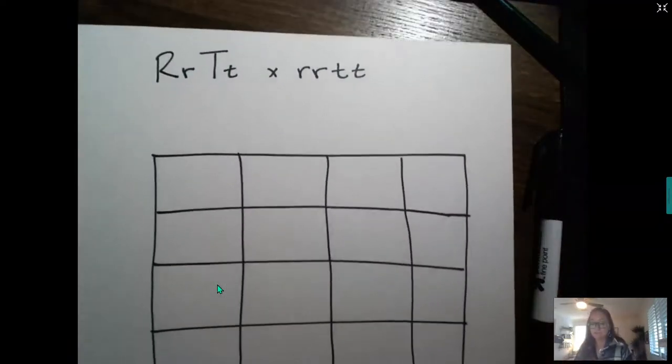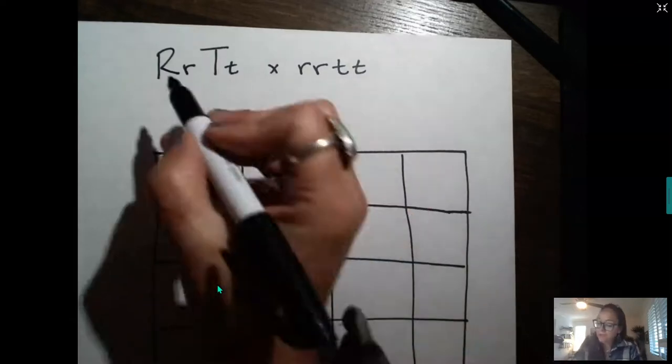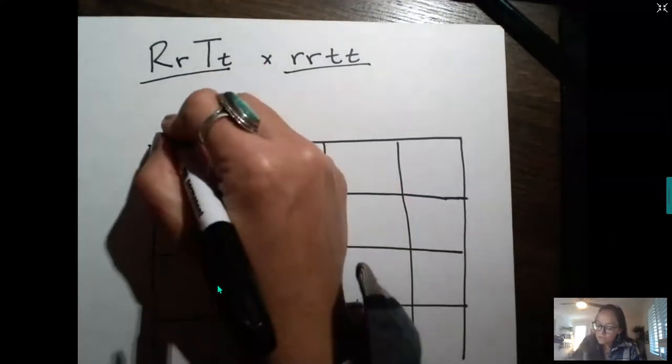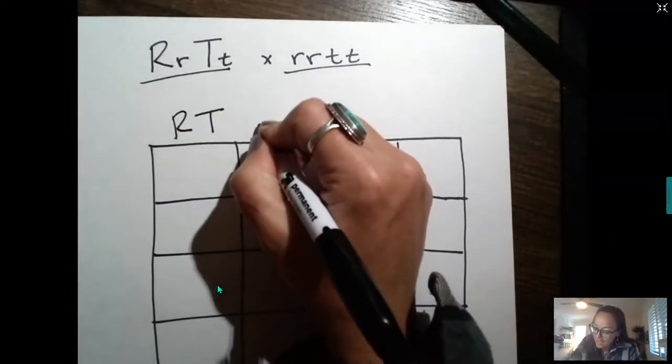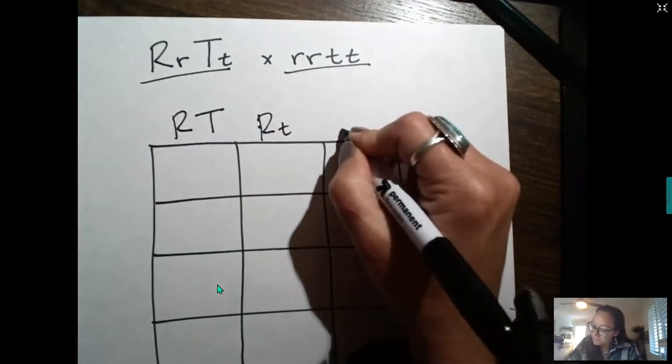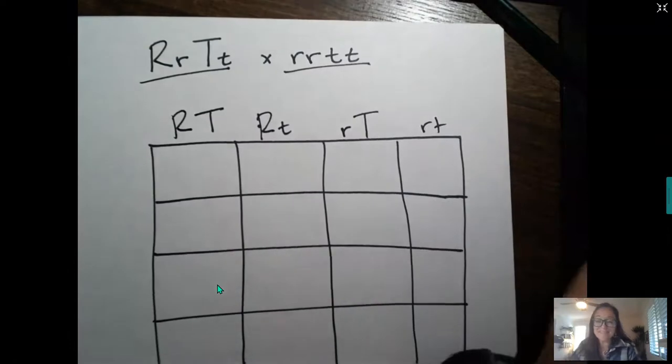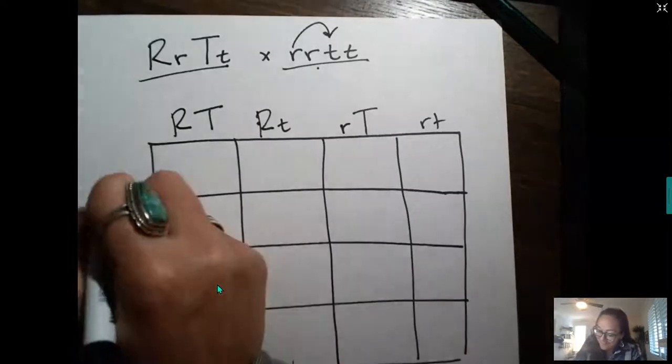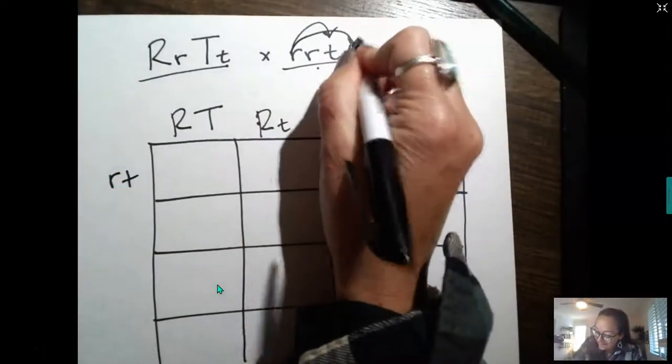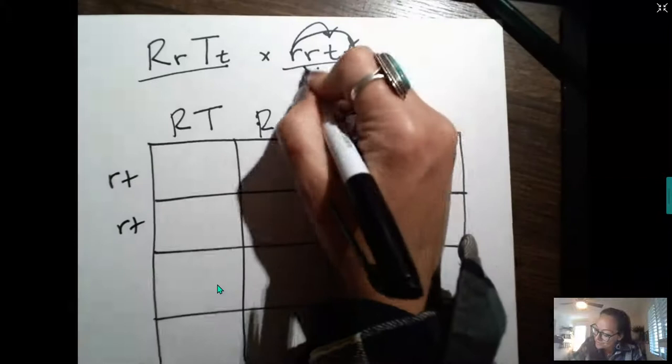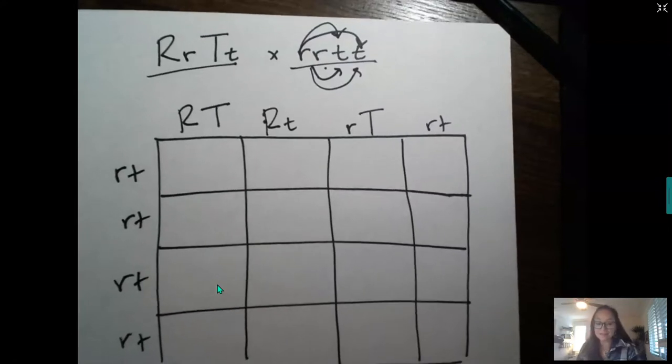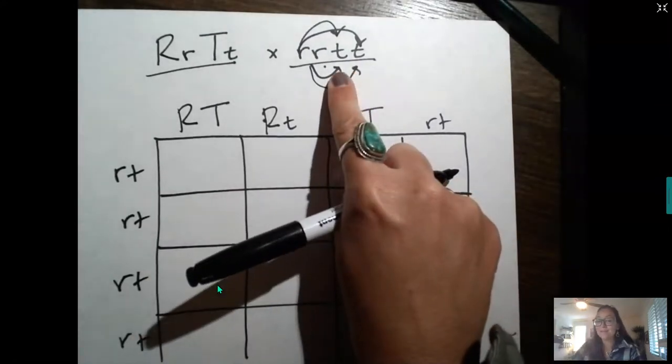Now, another type of cross that has a different expected ratio would be this type of cross where you have a dihybrid cross with homozygous recessive for both traits. So we already figured out previously how to set up the gametes that are possible. But now let's look at this parent. This parent, every single gamete, is only going to have recessive allele. So this is a nice shortcut when you are doing Punnett squares with a parent with this genotype.